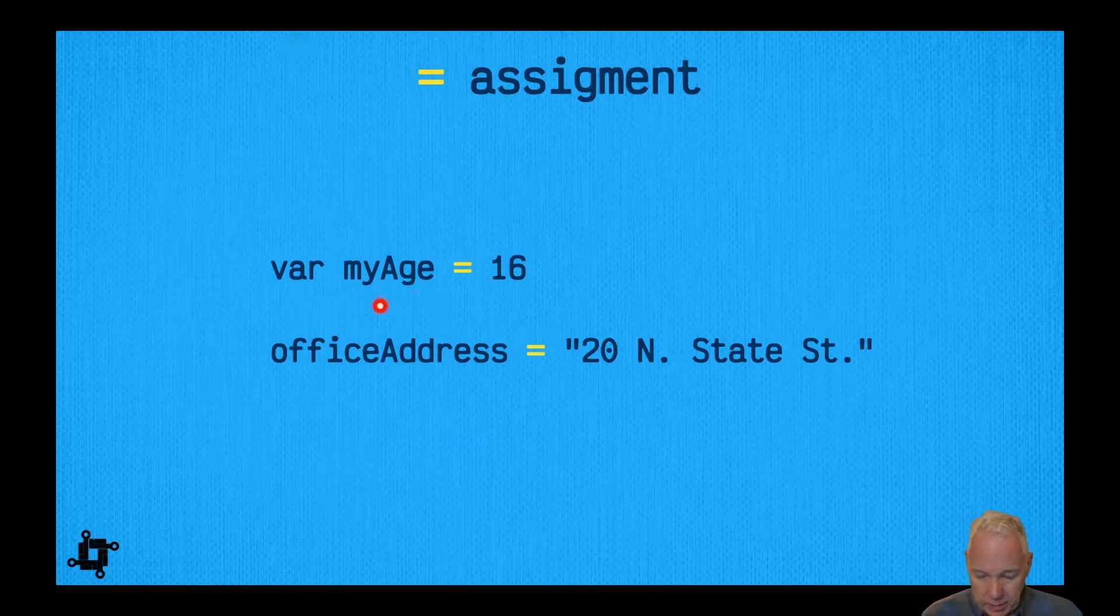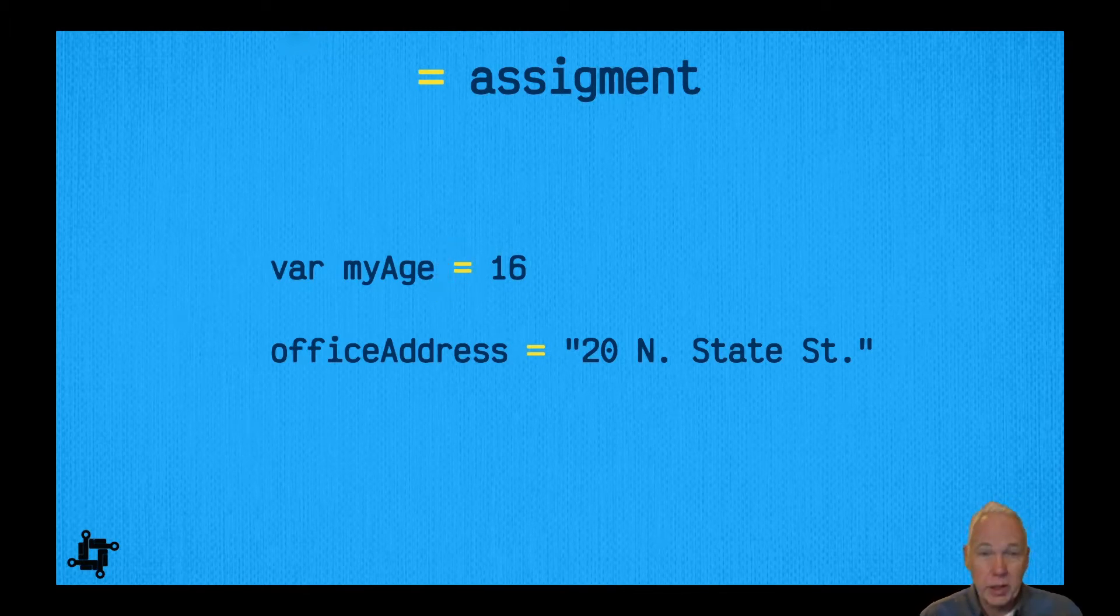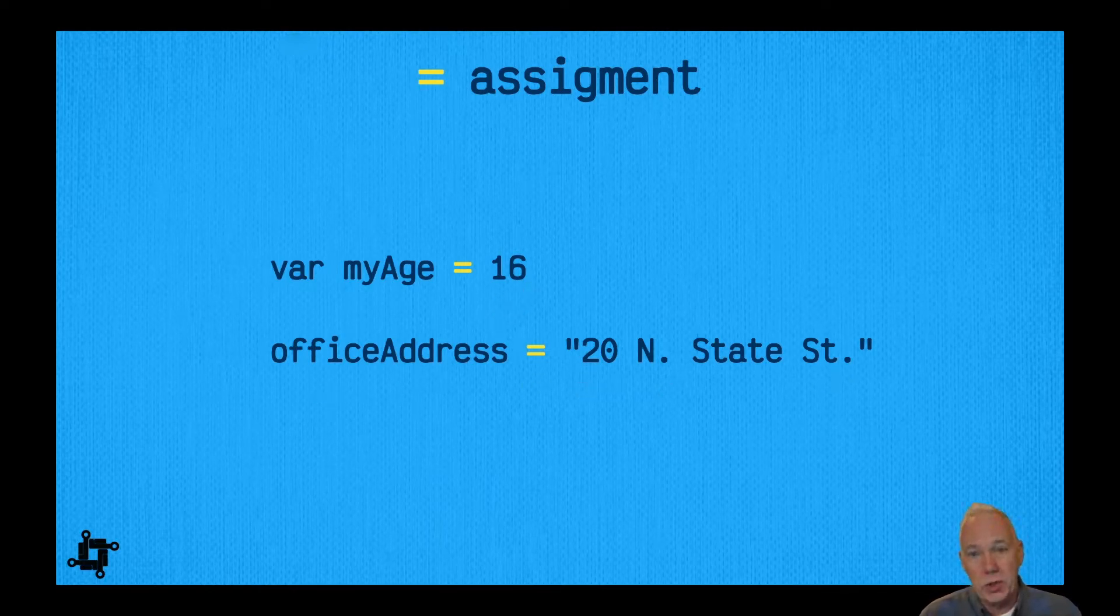Remember this isn't saying that something is equal to something else, it's basically saying, for example right here we have var, which we remember declares a variable. Here is the variable name, in this case it's myAge, and the equal sign means 'gets the value of', and in this case is 16. Here's another example: officeAddress, and we gave it a string. That's just a reminder of basic assignment.